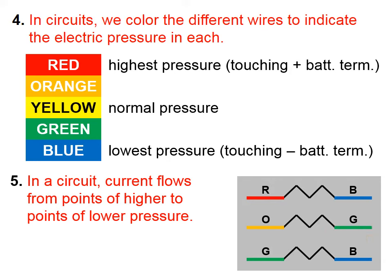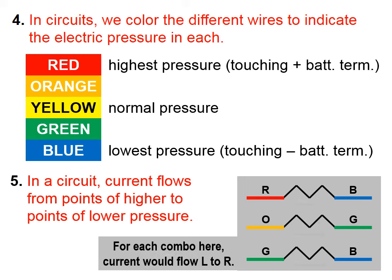We haven't talked about how you determine whether a wire might be colored orange or green, but the point here is this: a wire will conduct electric charge only when you have a region of higher pressure connected to a region of lower pressure, with a resistor in between. So in each of these cases, charge will flow from the left to the right, because what's on the left has a higher electric pressure than what's on the right.